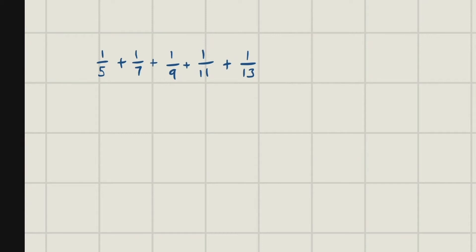Eric Burgess here. We've been given the following series: 1/5 + 1/7 + 1/9 + 1/13 and this goes on and on. They want to know: does it converge or does it diverge? As this goes on and on, what happens to this series?